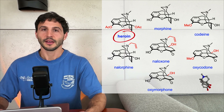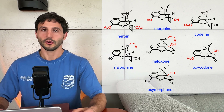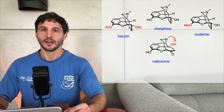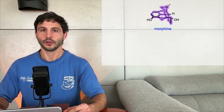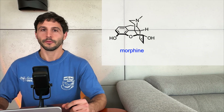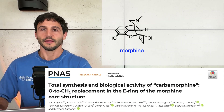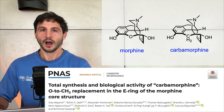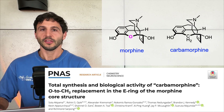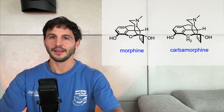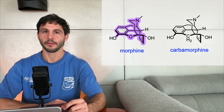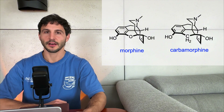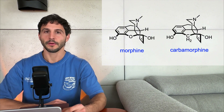For example, heroin is simply a morphine derivative where the two hydroxyl groups on the outside have been acetylated. Very few researchers have dared to change the core structure — the atoms that actually make up the rigid framework of morphine. In this study, the authors decided to do just that. They designed a version of morphine where the oxygen atom in the core was replaced with a methylene group. The idea was to keep the same overall shape of the molecule, but to see if this new analog, called carbomorphine, could still relieve pain, possibly with fewer side effects.